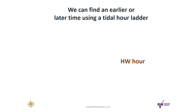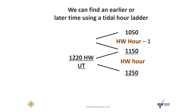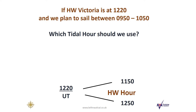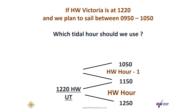We can find an earlier or later time using the Tidal Hour ladder. So on the 2nd of January, high water hour minus 1 will be from 10:50 to 11:50. On the 2nd of January, if high water Victoria is at 12:20 and we plan to sail between 09:50 and 10:50, using the Tidal Hour ladder, we can work out that high water minus 2 is the Tidal Hour from 09:50 to 10:50.